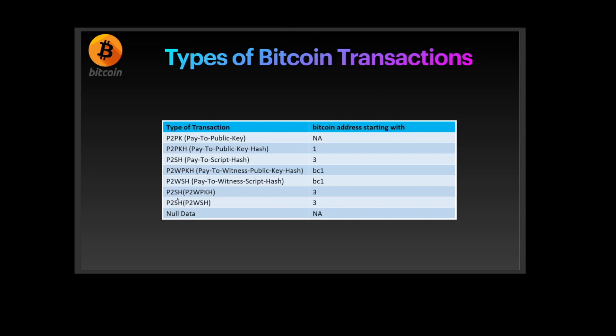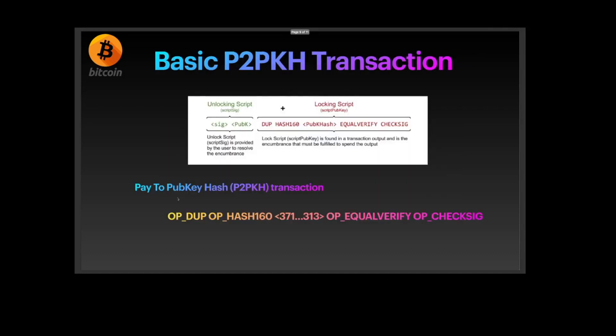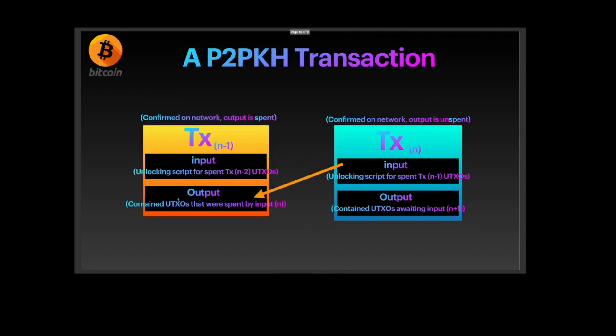There are different types of Bitcoin transactions. In this session we're going to talk about P2PKH — Pay to Public Key Hash. A basic P2PKH transaction has an unlocking script and a locking script. It includes OP_DUP, OP_HASH160, the hash, OP_EQUALVERIFY, and OP_CHECKSIG.